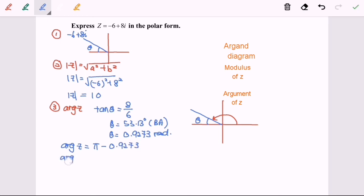Finally, the argument of z is equal to 2.2143 radian.